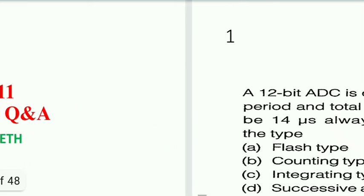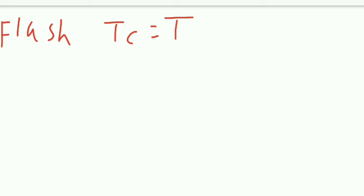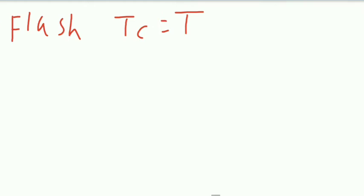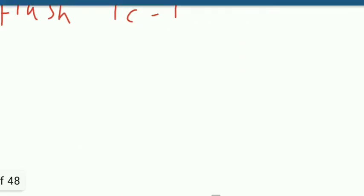Now we go to ISRO 2011 questions. A 12-bit ADC is operating with a 1 microsecond clock period and conversion time is seen to be 14 microseconds. What type of ADC is it? For a flash ADC, tc equals t (clock period). Here conversion time is 14 and clock period is 1, so 14 is not equal to 1 — it is not a flash ADC.